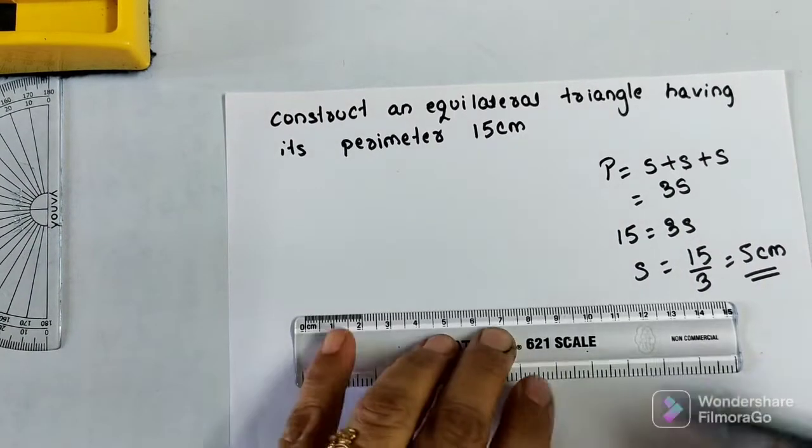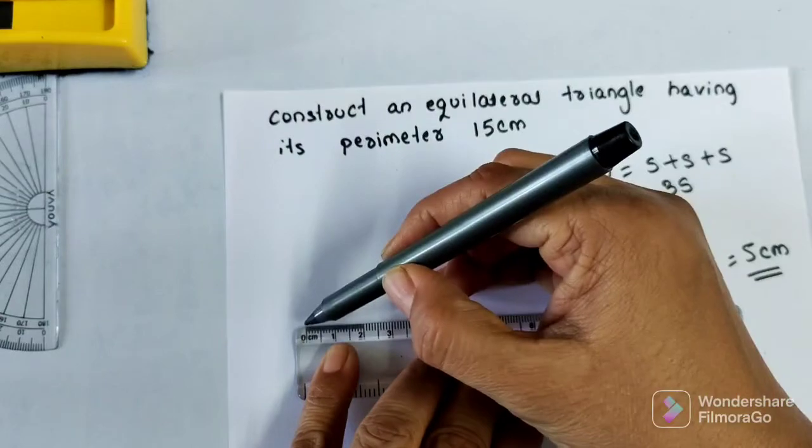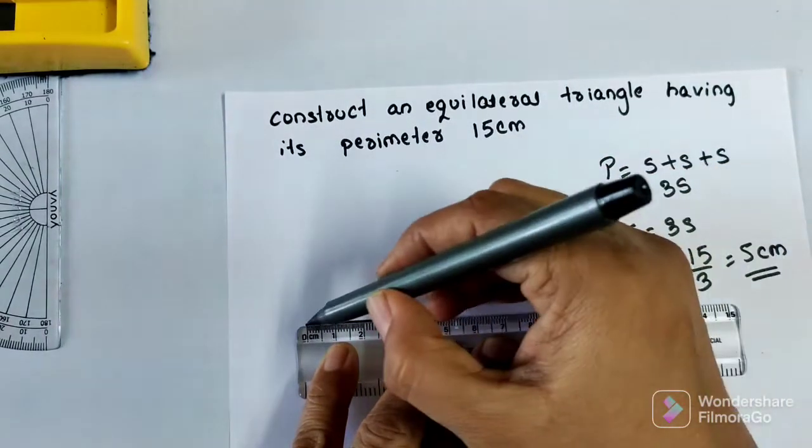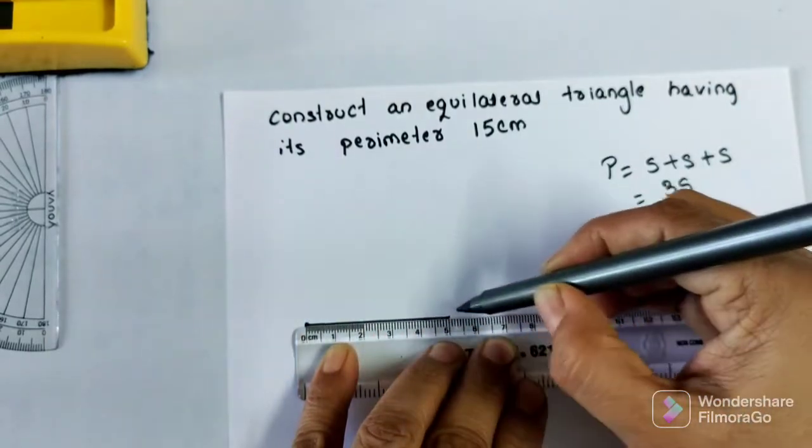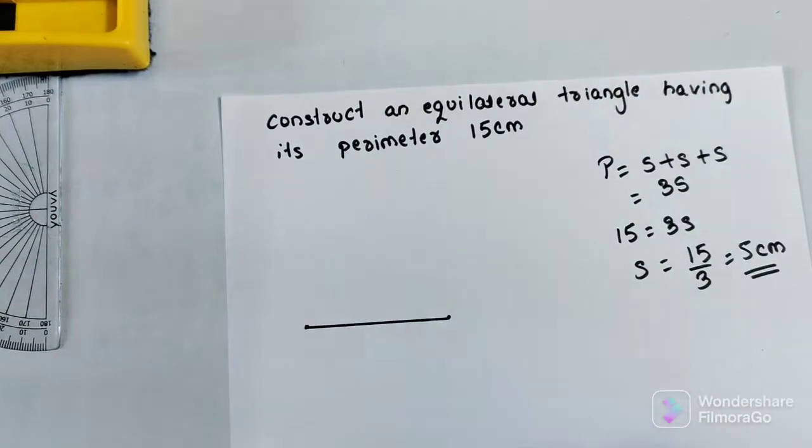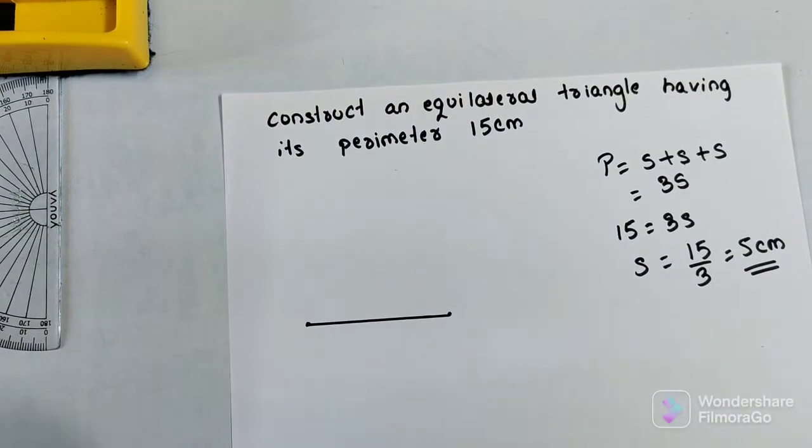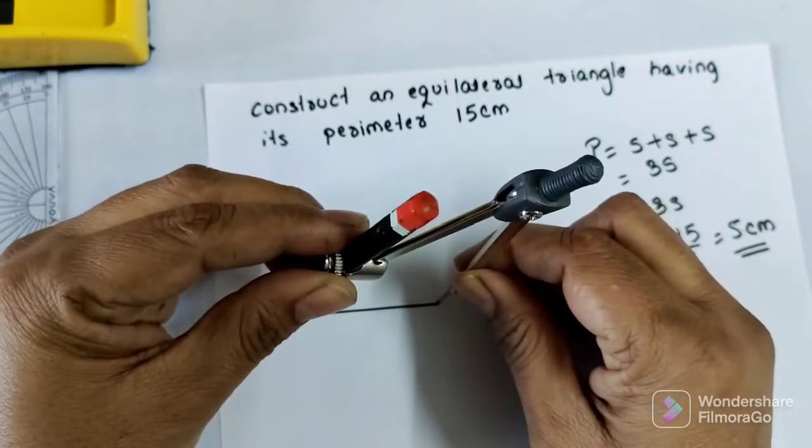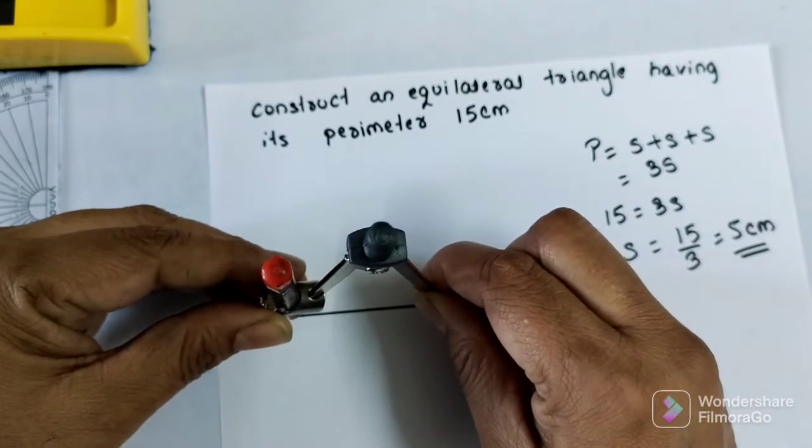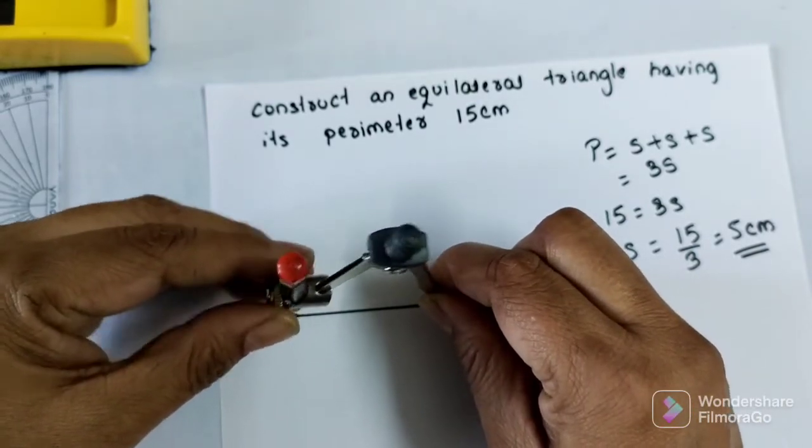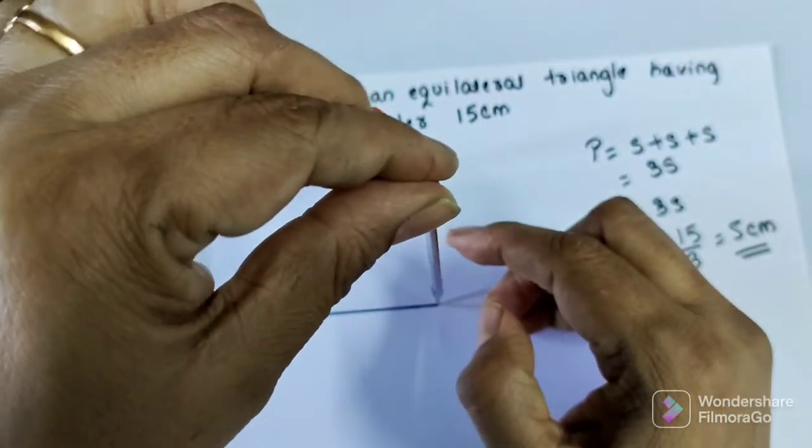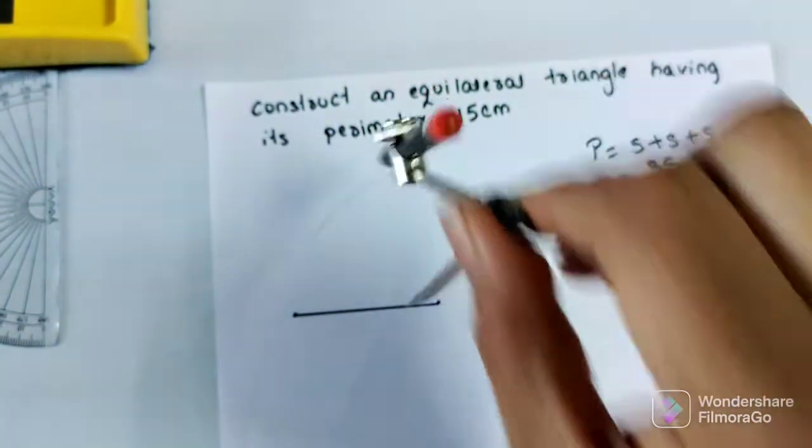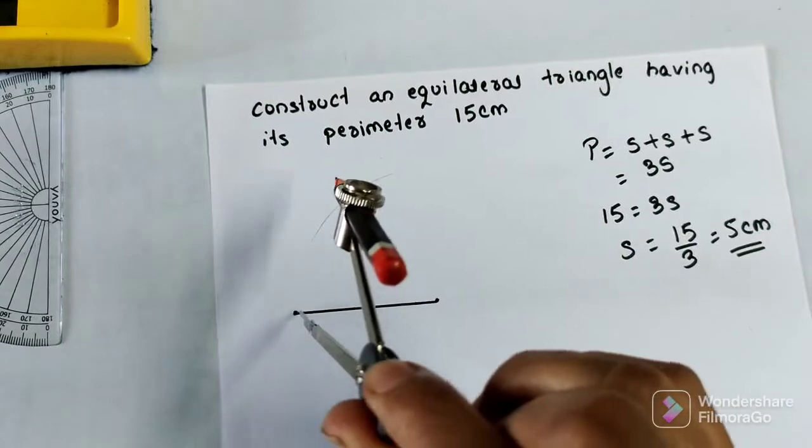So first I am going to draw this one side which is measuring the 5 cm here. And I am going to just take this compass and measure this 5 cm. And I will cut this arc here. So same thing I will keep it on this point.